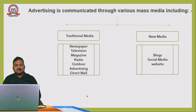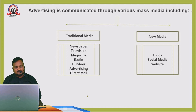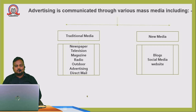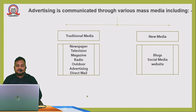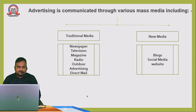Advertising is communicated through various mass media. There are two ways: first is traditional media, and second is new media. Traditional media includes newspapers, television, magazines, radio, outdoor advertising, and direct mail. New media includes blogs, social media, and websites and so on.